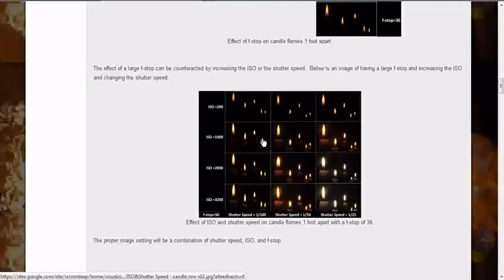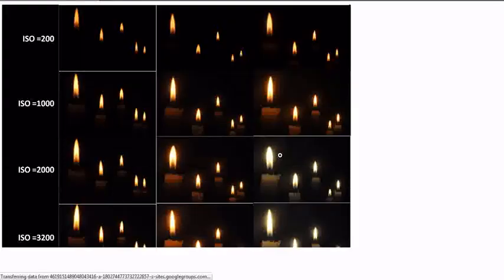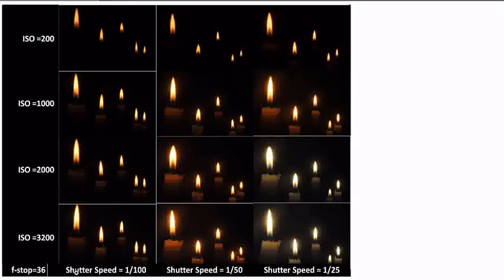I made this kind of a table to show the effect of ISO and shutter speed using an f-stop of 36. We start out with ISO 200, and as we go from 1/100th of a second to 1/25th of a second, we can see the flames getting brighter. And then as we increase our ISO, the image is getting brighter and brighter. In this bottom corner, we can see the most of the candle, but we're starting to get some discoloration, which I believe is due to the amount that we've increased the ISO.